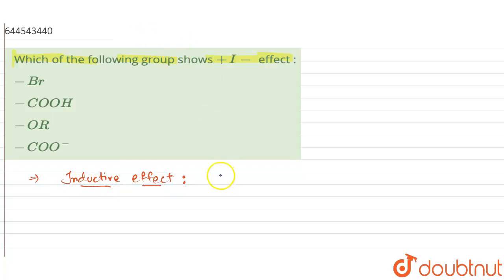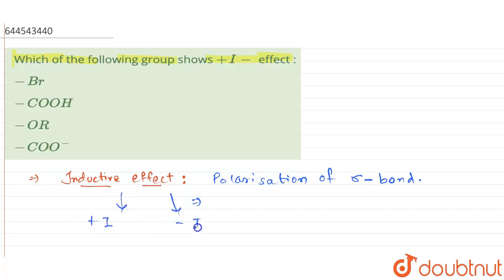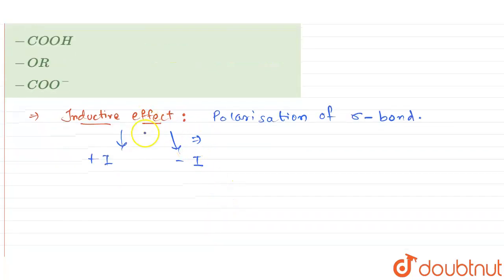First of all, let's see what inductive effect is. Inductive effect means it is the polarization of the sigma bond. When an electronegative atom or group withdraws the electron pair from the sigma bond towards itself, that is known as inductive effect. We have two types: plus I effect and minus I effect. This is caused due to the difference in electronegativity of atoms within the molecule.